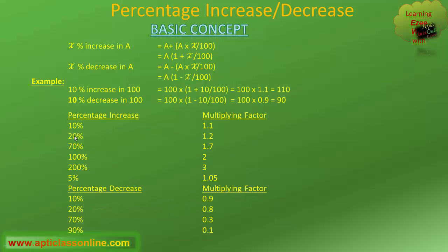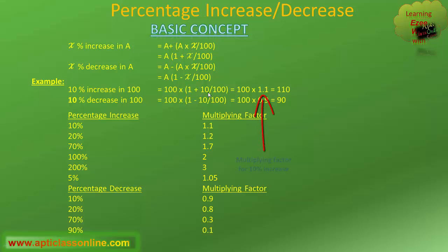For instance, the multiplying factor for 10% increase is 1.1. That is, if we have to calculate 10% increase in any value, we have to multiply that value by 1.1 to get the final value. Similarly, in this table, these are the corresponding multiplying factors for the respective percentage increase and decrease.